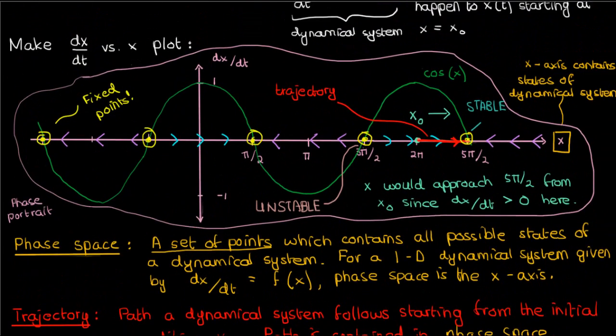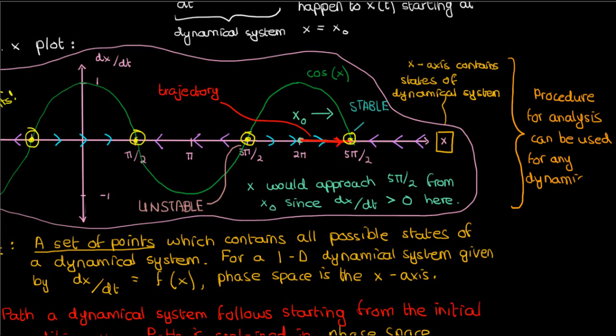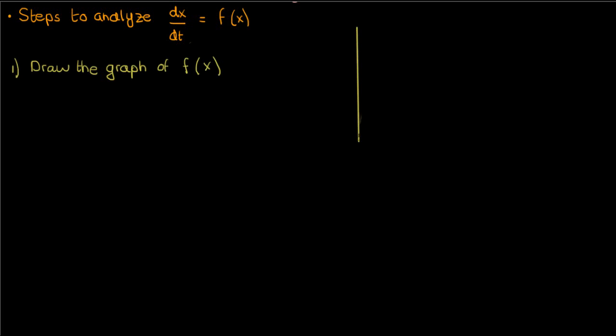Anyway, this whole procedure that I used to generate the phase portrait of dx/dt equals cos(x) and analyze the behavior of this dynamical system, this whole procedure can be applied to any one-dimensional dynamical system dx/dt equals f(x), so long as f(x) is nicely behaved and continuous and differentiable. So let's describe the steps necessary to analyze a general one-dimensional dynamical system given by dx/dt equals f(x). The first step is to draw the graph of f(x), or in other words, the beginning of the phase portrait.